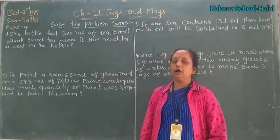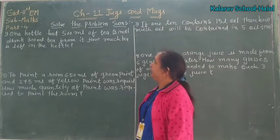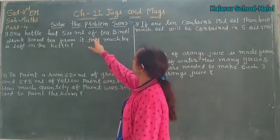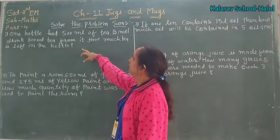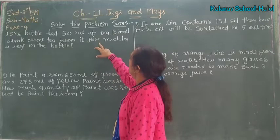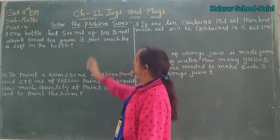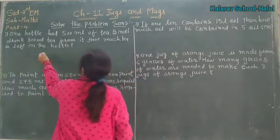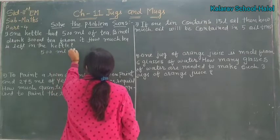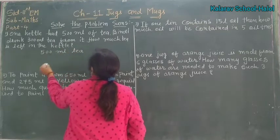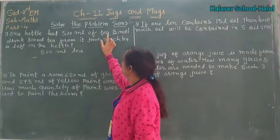Today we are going to see problems of capacity. Here, one category has 500 ml of tea. Winner drank 300 ml tea from it. How much tea is left in the category? Winner ke paas 500 ml tea thi. Ab kya tari ki? 300 ml tea.